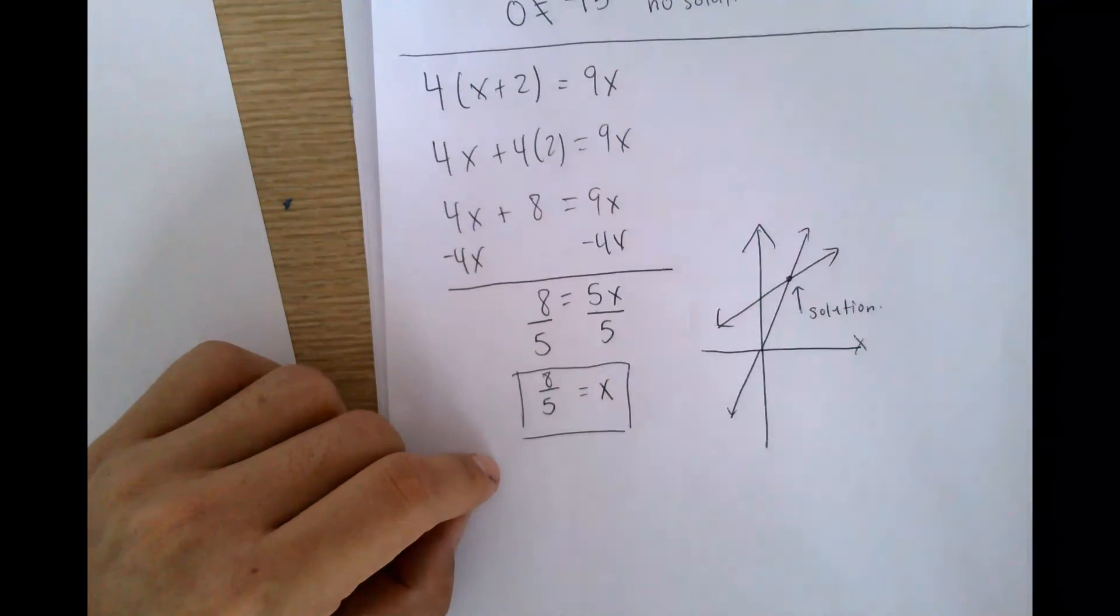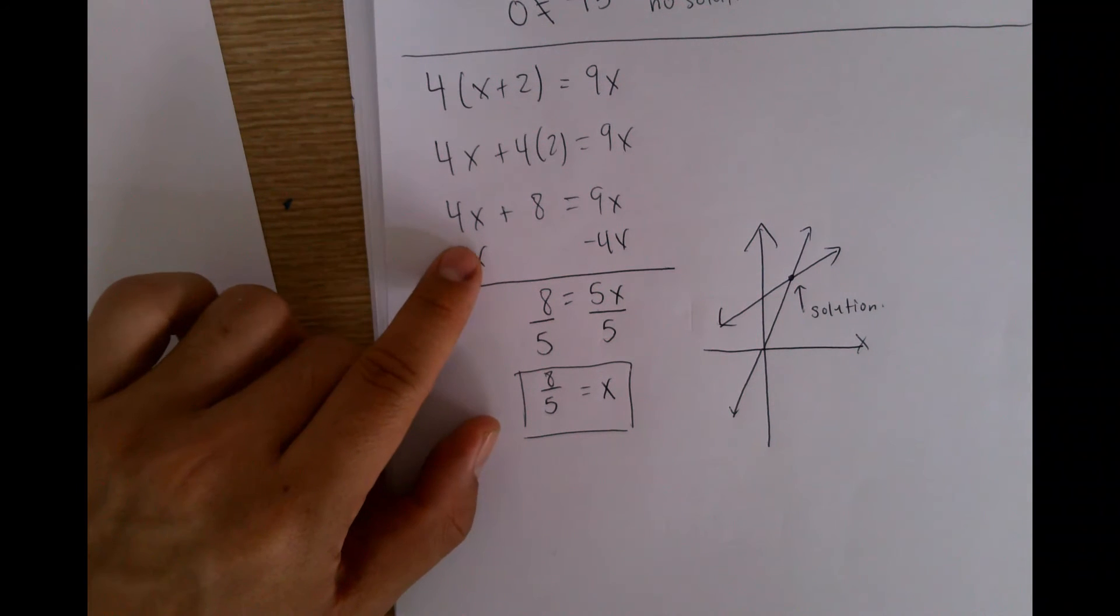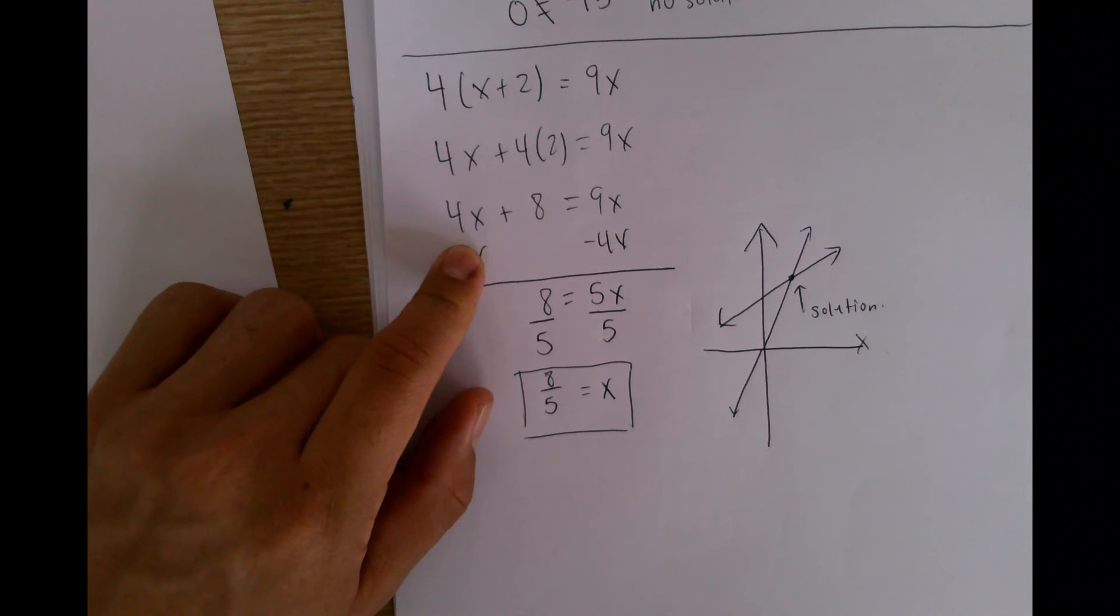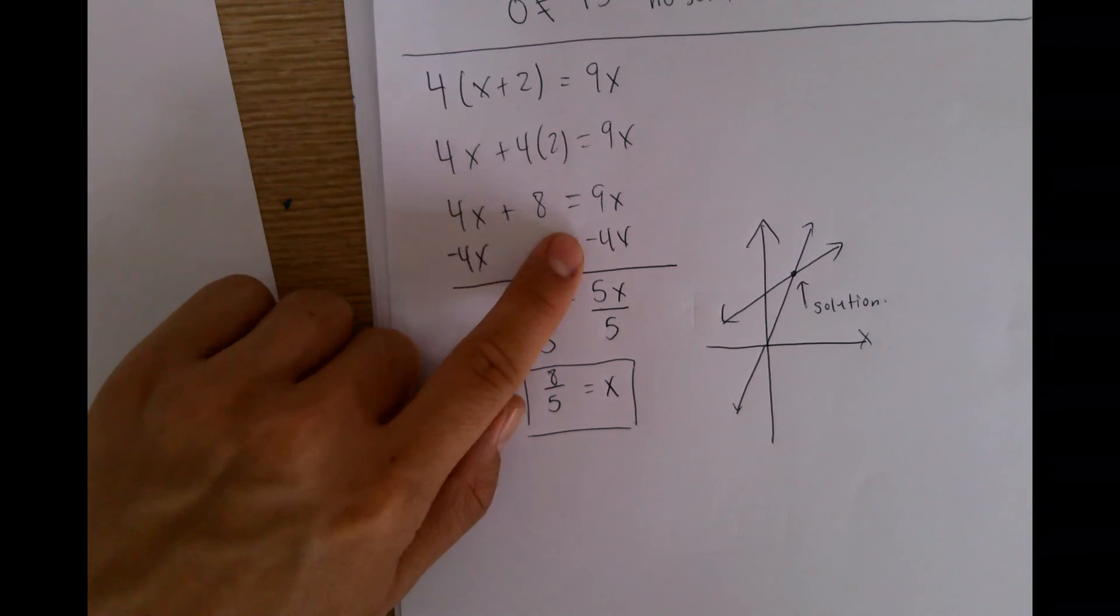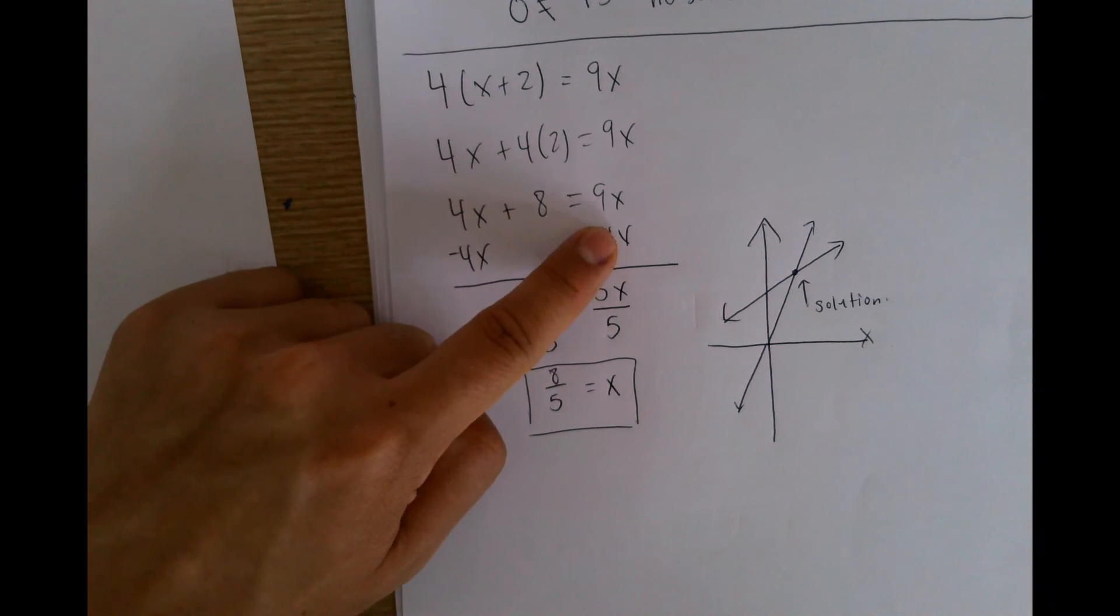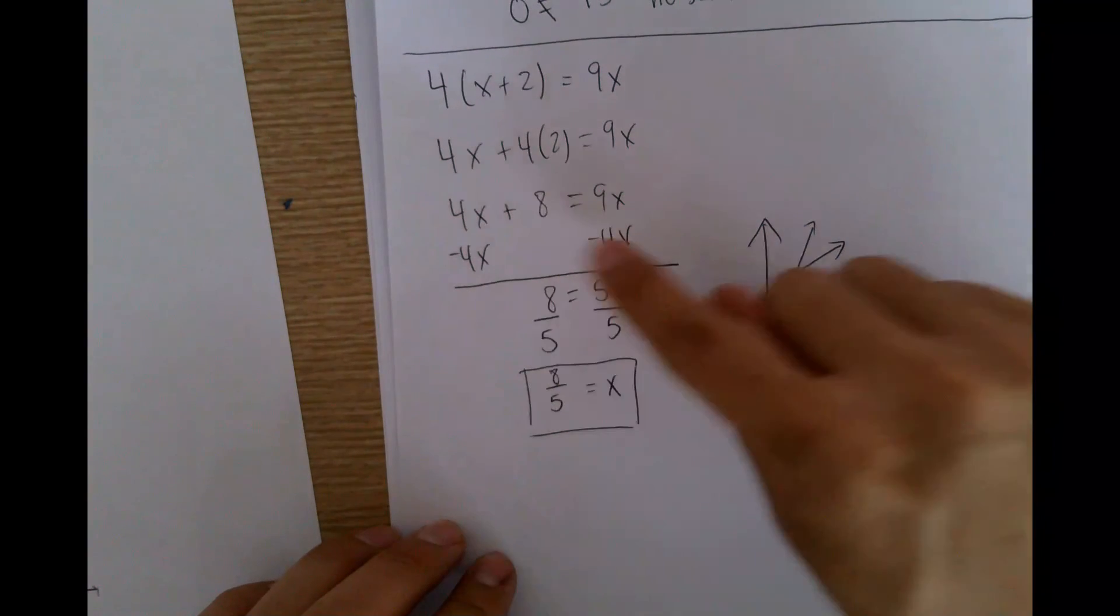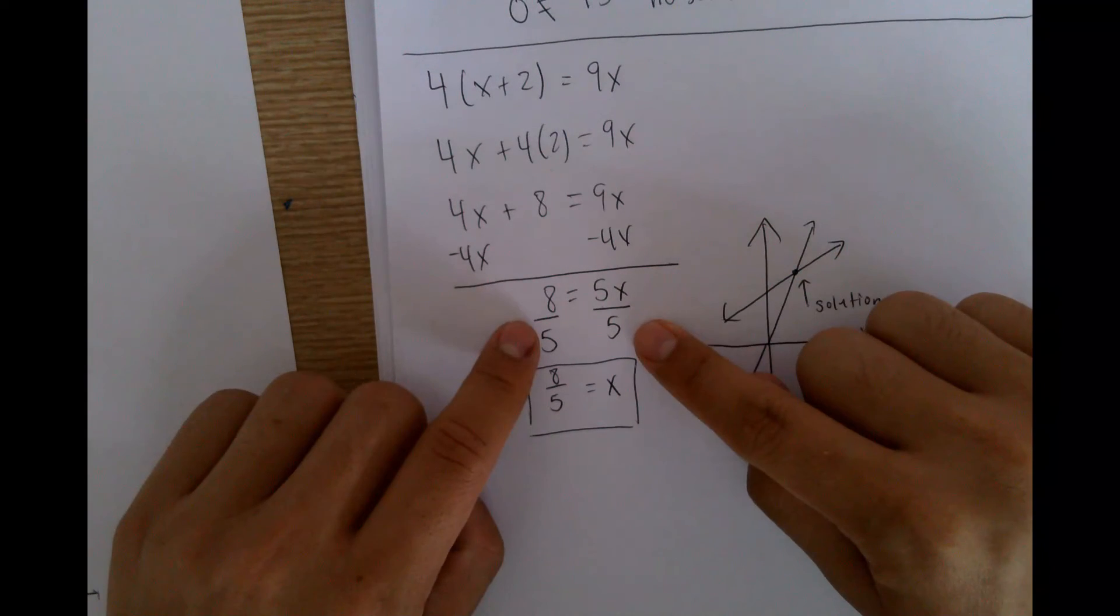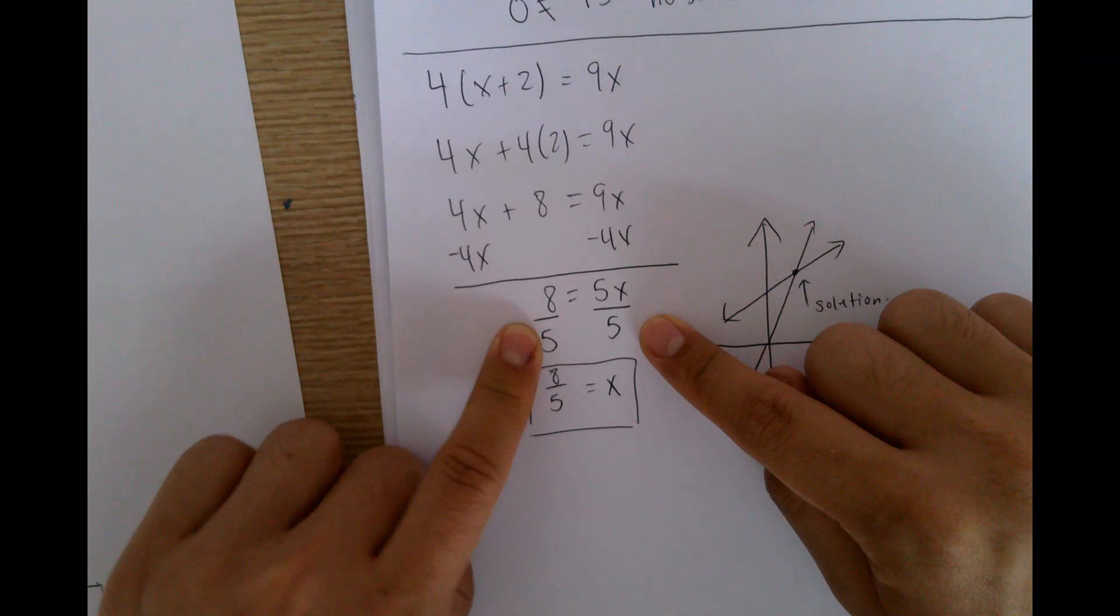The reason is, again, if I were to look at this, this is like saying I have 4 boxes of stuff plus 8 dollars is equal to 9 boxes of stuff. And I want to see how much is in each of those boxes. So I would subtract the amount of boxes from both sides, and then I would divide by how many boxes I have remaining, and that would tell me how much is in each box.